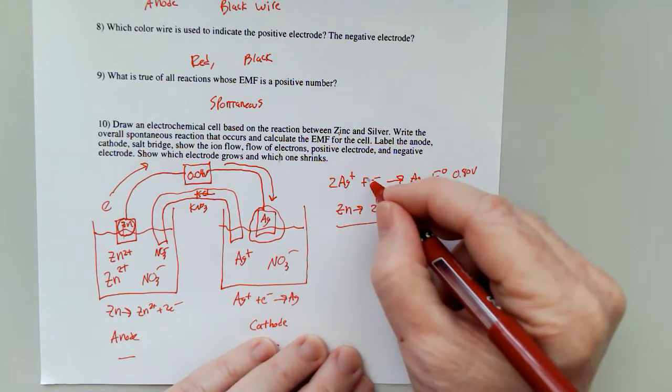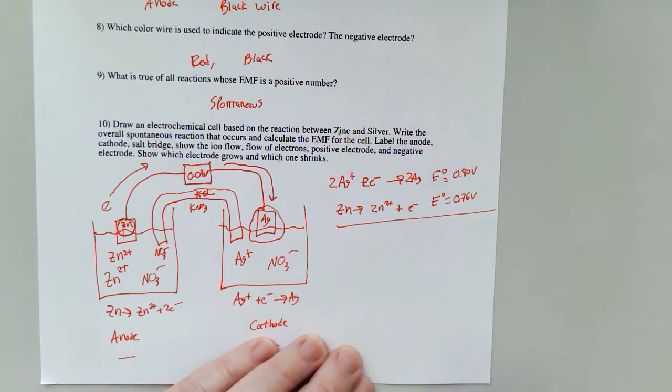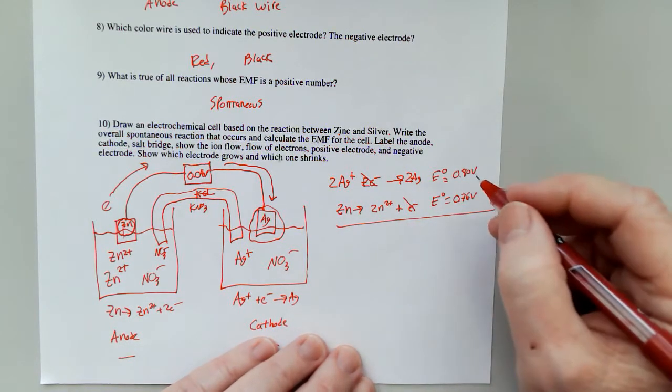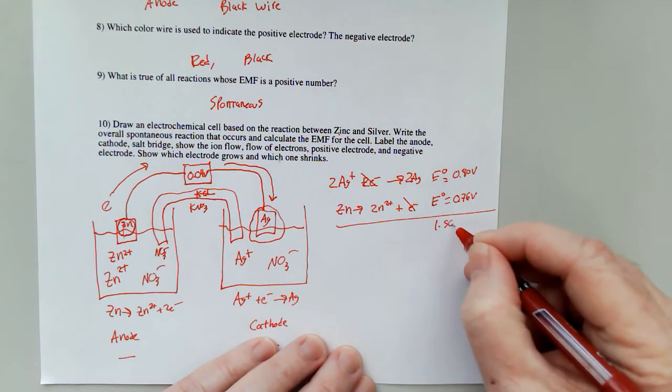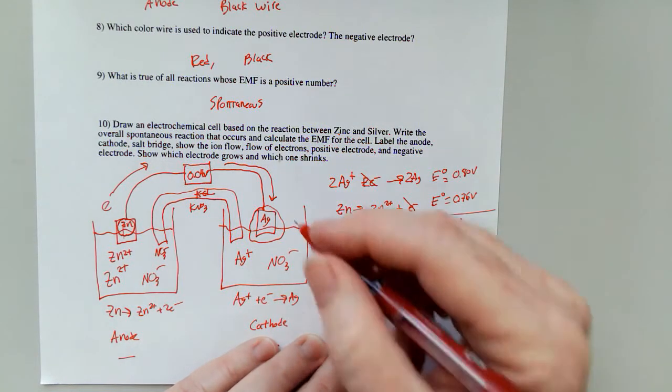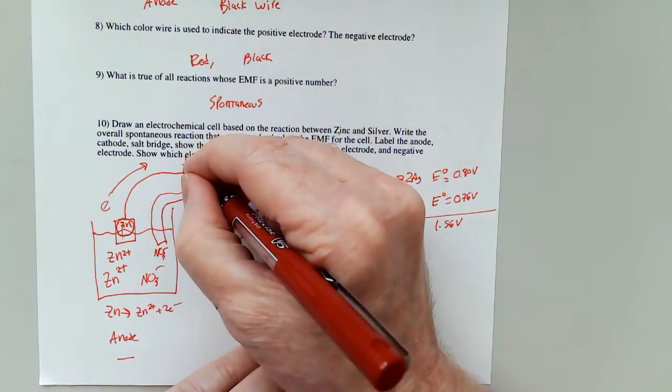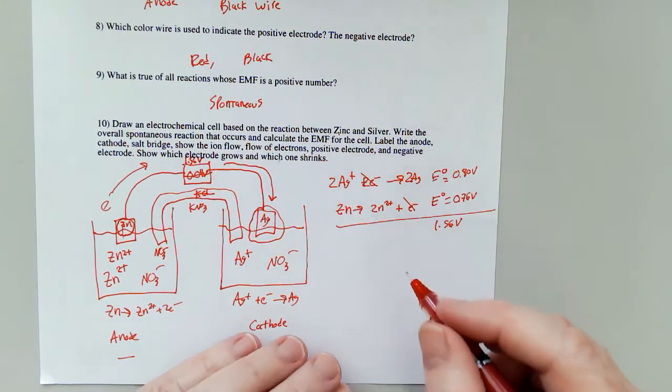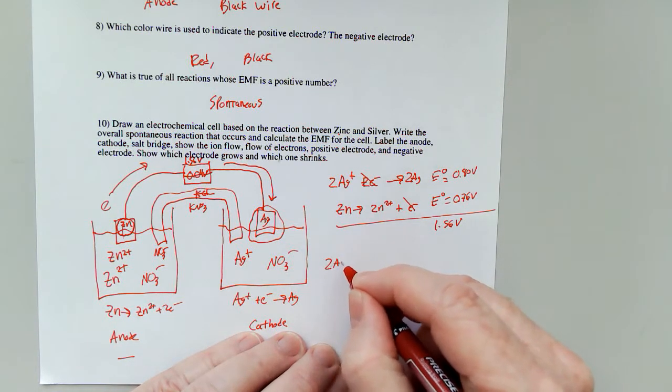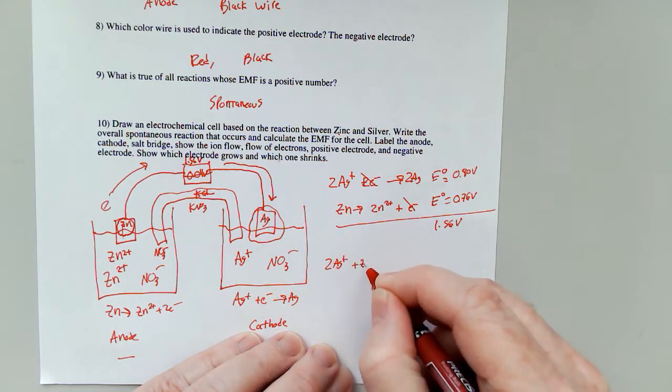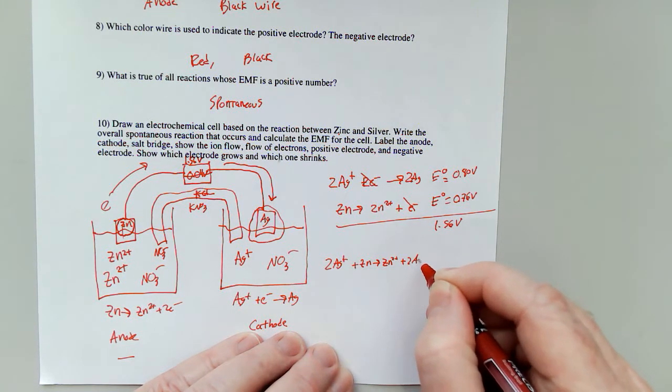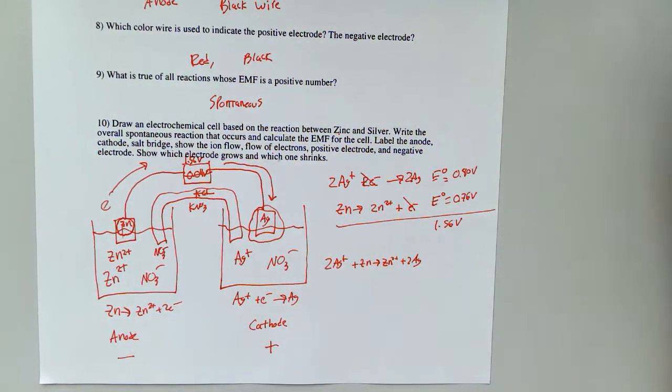Now I do need to multiply this by 2. It doesn't affect the value there. The electrons cancel. And this is going to be 1.56 volts. So sorry, that reads 1.56 volts. It's a mistake on my part there. And the overall equation is 2 Ag+ plus Zn gives me Zn 2+ and 2 Ag.